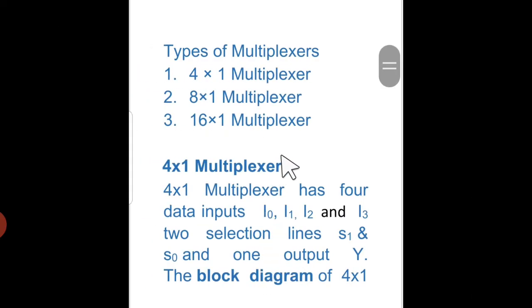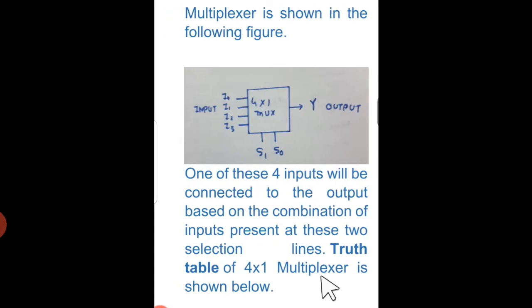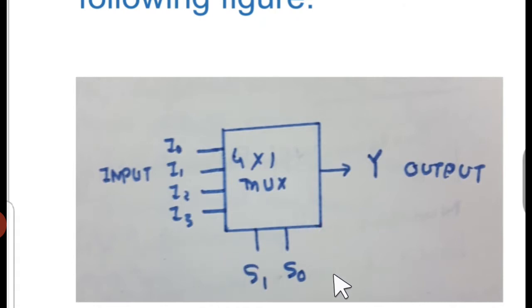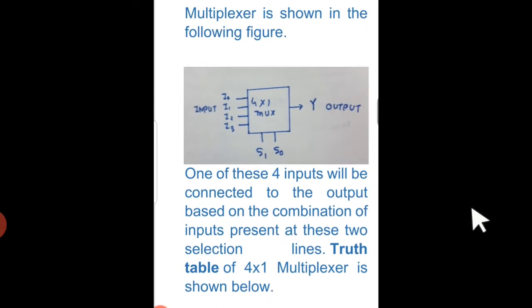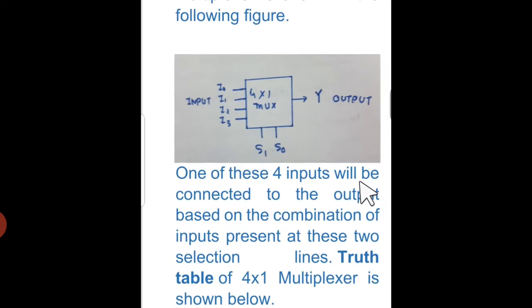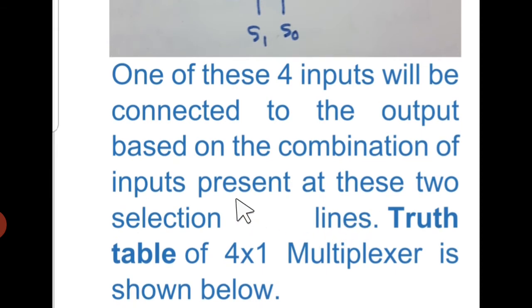There are different types of multiplexers: 4-to-1, 8-to-1, and 16-to-1 multiplexers. In this video I am going to discuss the 4-to-1 multiplexer only. A 4-to-1 multiplexer has 4 data inputs — I0, I1, I2, and I3 — two selection lines S1 and S0, and one output Y. You can observe these in the block diagram: inputs, selection lines, and the output. One of these four inputs will be connected to the output based on the combination present at the two selection lines.